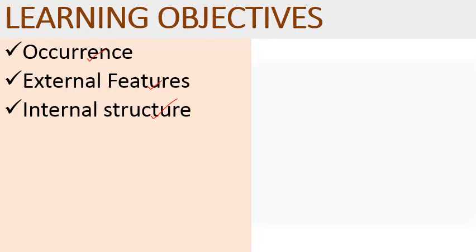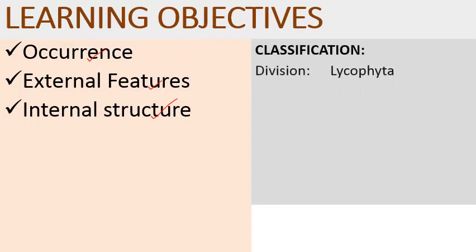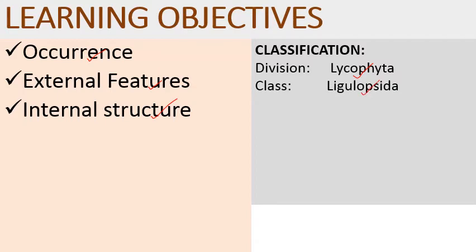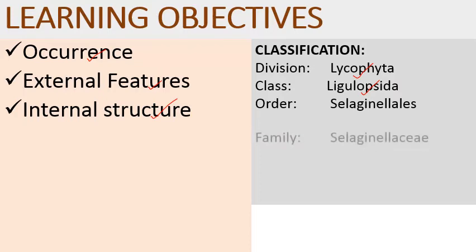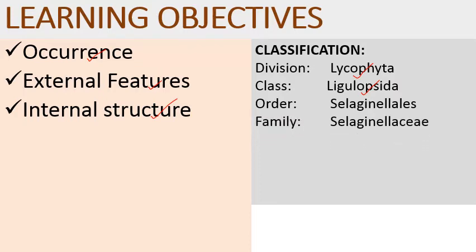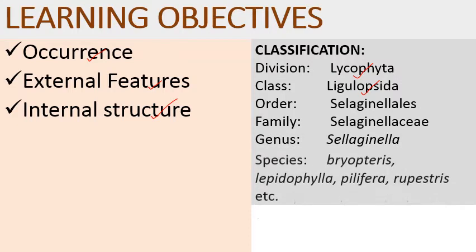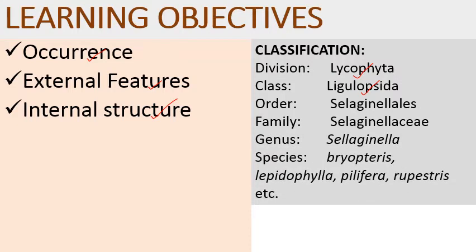Starting with classification: Selaginella belongs to division Lycophyta. The class is Ligulopsida — named because at the leaf base there is a tongue-shaped structure known as ligule. The order is Selaginellales, family Selaginellaceae, genus Selaginella. Some species include bryopteris, lepidophylla, pilifera, rupestris, and oregana.